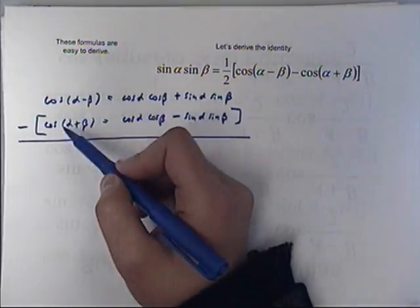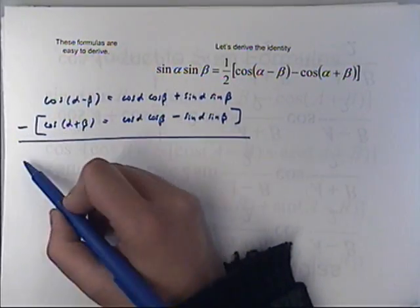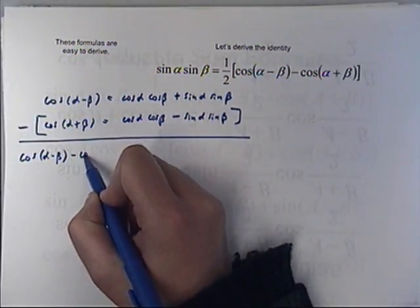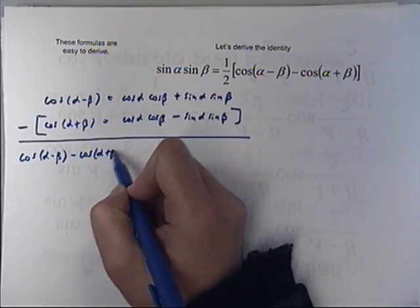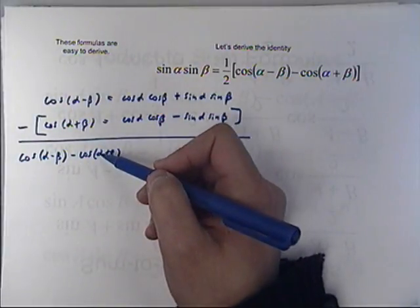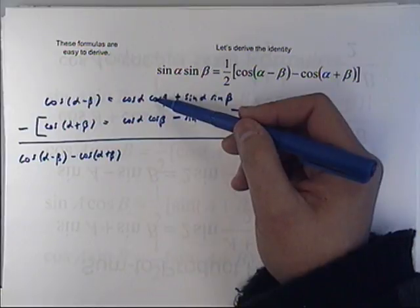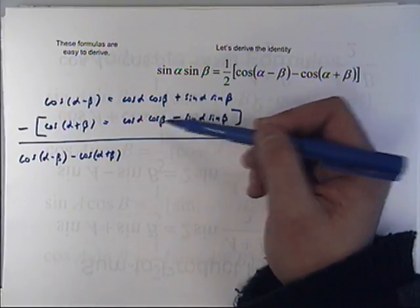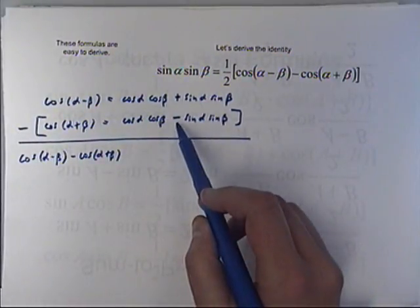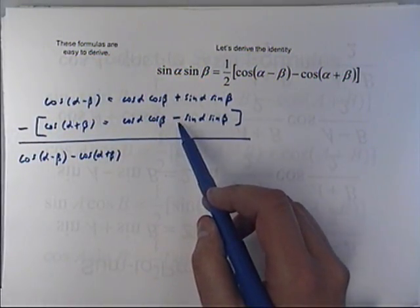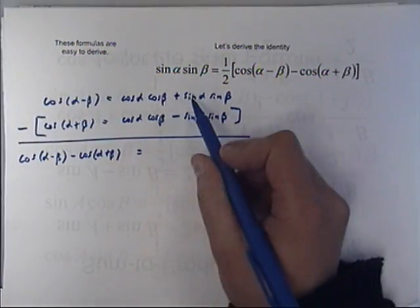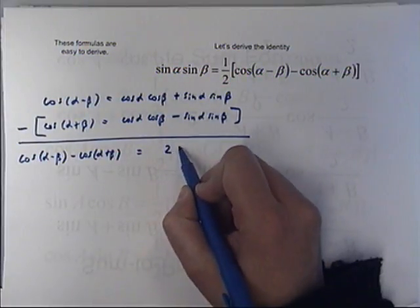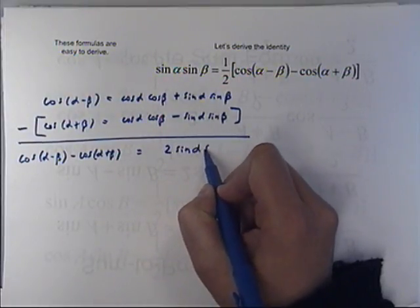When I subtract on the left side, I get this minus this. They don't actually match at all — there's no commonality so we could add them together, so I'll simply write it as two separate parts subtracting them. On the right, what happens when I subtract is these two cancel out — cosine alpha cosine beta minus itself is nothing. When I minus here, I'm minusing a negative, so it's actually like a plus. These two give me one sine alpha sine beta plus one sine alpha sine beta, which is two sine alpha sine beta.